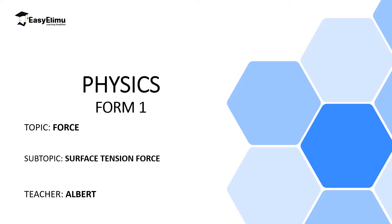Hello students, welcome to ECLIMU Learning Simplified. In the previous lessons we discussed different categories of forces including adhesive and cohesive force. In this lesson we are going to discuss surface tension — a force that makes the surface of liquids appear like a stretched elastic thin skin, which makes it possible for things like mosquitoes to float on water. Even a razor blade carefully placed on top of water floats, though a razor blade is made of steel which is more dense than water.